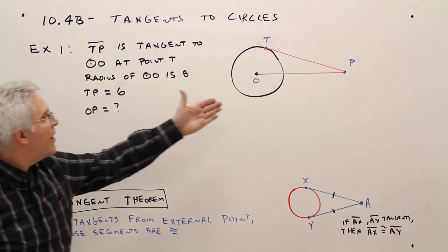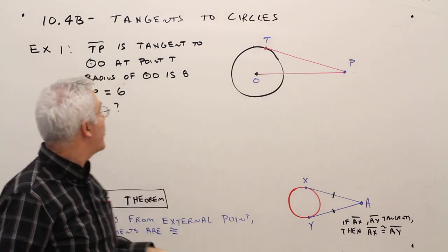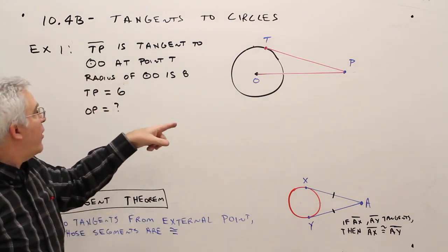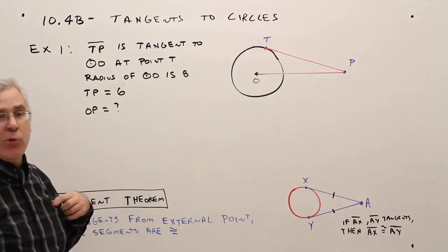Alright, here's example 1. TP is tangent to circle O at point T, so I know that's a tangent. The radius of circle O is 8. TP equals 6. Find OP.